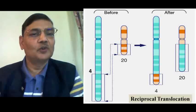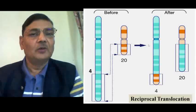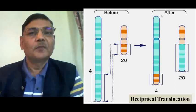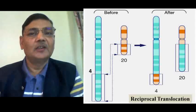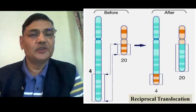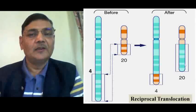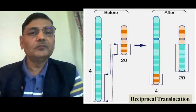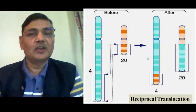So there is an exchange of chromosome parts between chromosomes 4 and 20. As a consequence, in the resulting diagram we observe that chromosome 4 now carries a translocated part of chromosome 20 in its lower portion, and chromosome 20 carries a long portion belonging to chromosome 4. This has happened because of reciprocal translocation.